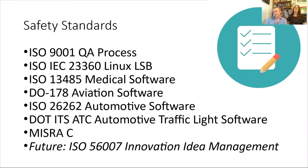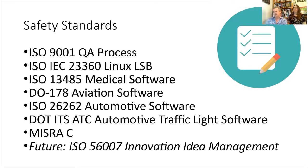Safety critical standards include ISO 9001, which gives us a repeatable QA process. 23360 is the standard for Linux. 13485 covers medical software. 178 is for aviation software. 26262 is for automotive software. ITSATC covers automotive traffic light software. There's also MISRA-C for safety-critical C systems best practices. ISO 56007 is a future standard in idea management extending 9001 into the innovation realm.